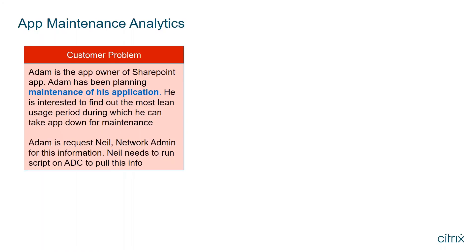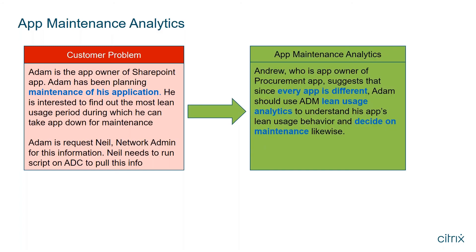The fourth use case is app maintenance analytics. Consider an app owner — Adam — who manages SharePoint and wants to find the most lean usage period for maintenance. He could rely on hunch or follow general best practices from other admins, but ADM provides real analytics data. He consults the network admin Neil, who may not have this information readily available. Another admin suggests using ADM's lean usage analytics to make data-driven decisions specific to each application.